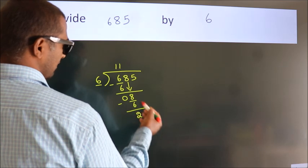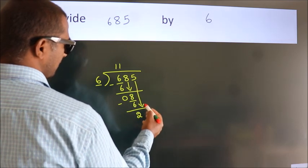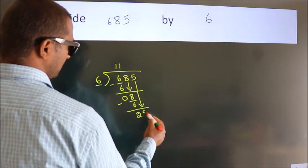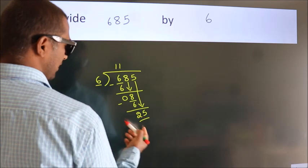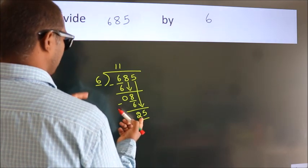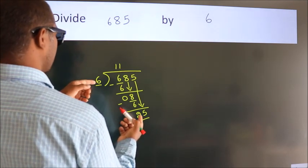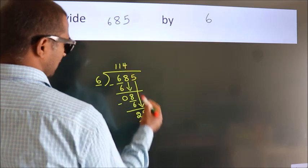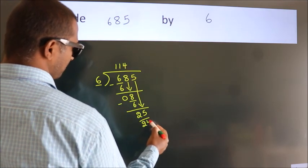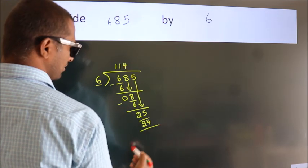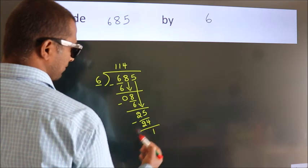After this, bring down the beside number. So 5 down, 25. A number close to 25 in 6 table is 6 four 24. Now we subtract. We get 1.